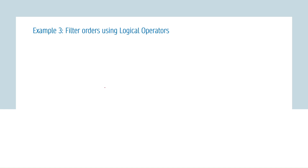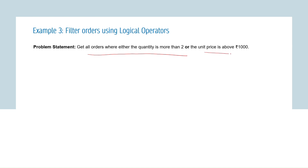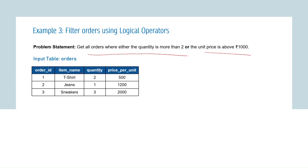Let's see their implementation through examples. The example is to filter orders using logical operators. The problem statement: get all orders where either the quantity is more than 2 or the unit price is above 1000. The sample data is the orders table with four columns: order ID, item name, quantity, and price per unit — the same table from the previous example. Since either one condition must be true, this is a case for the OR operator.